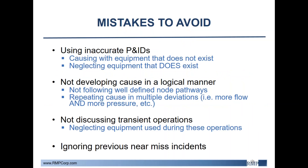The first mistake is using inaccurate P&IDs. It is important to use accurate ones because this could potentially develop invalid causes — either by creating causes from equipment that no longer exists or is in a different location in the process, or conversely, neglecting equipment that does exist and failing to address any affiliated hazards.